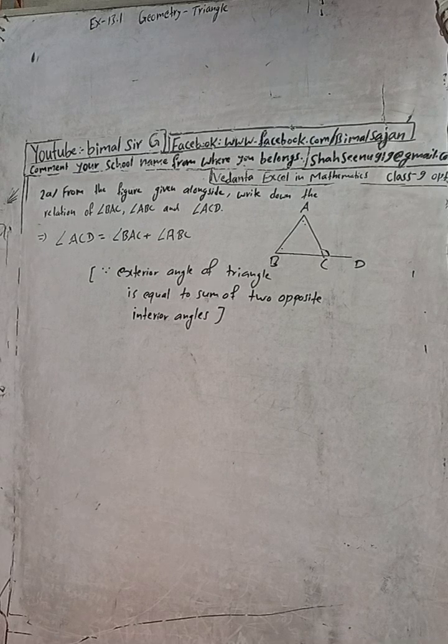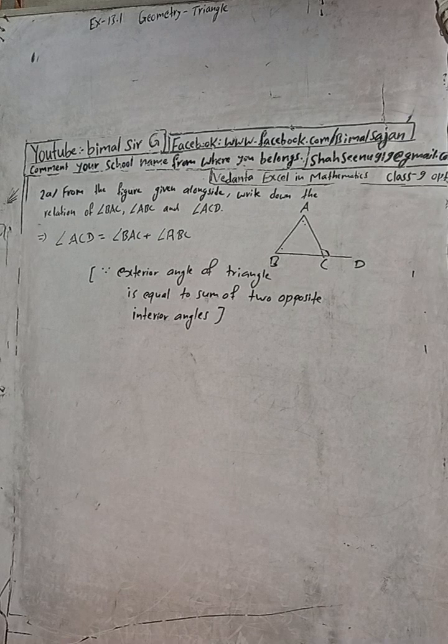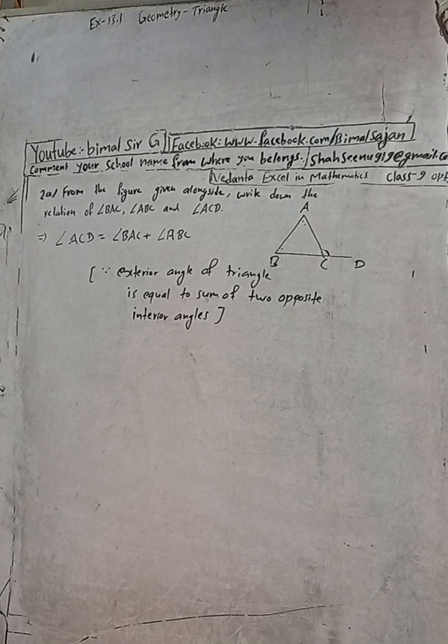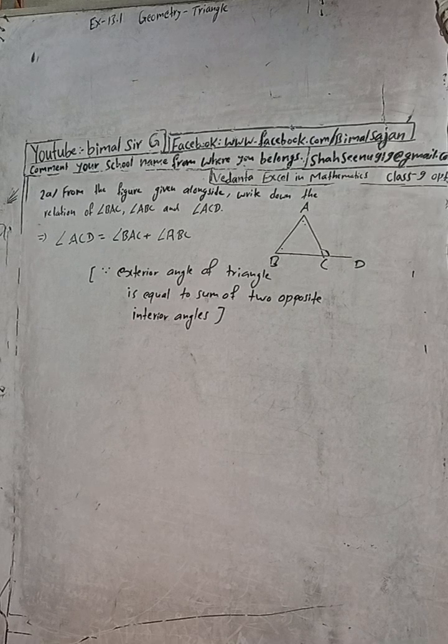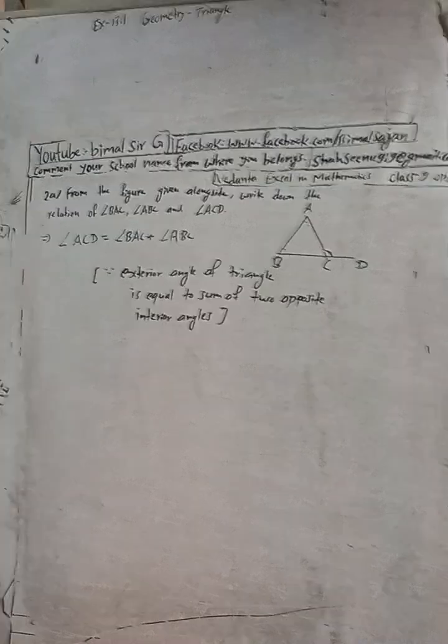We can write the relation in terms of the question: angle ACD equals the sum of two opposite interior angles, angle BAC and angle ABC. This is your reasoning. This is the solution.